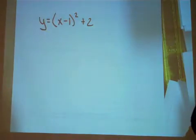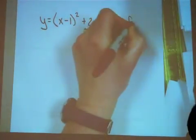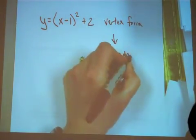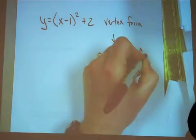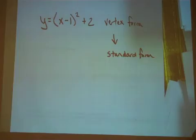Let's begin with an equation in the vertex form without an a value. Notice that the h is a positive 1 and the k is a positive 2. In order to convert to standard form, the first thing that we're going to need to do is deal with the quantity x minus 1 squared.